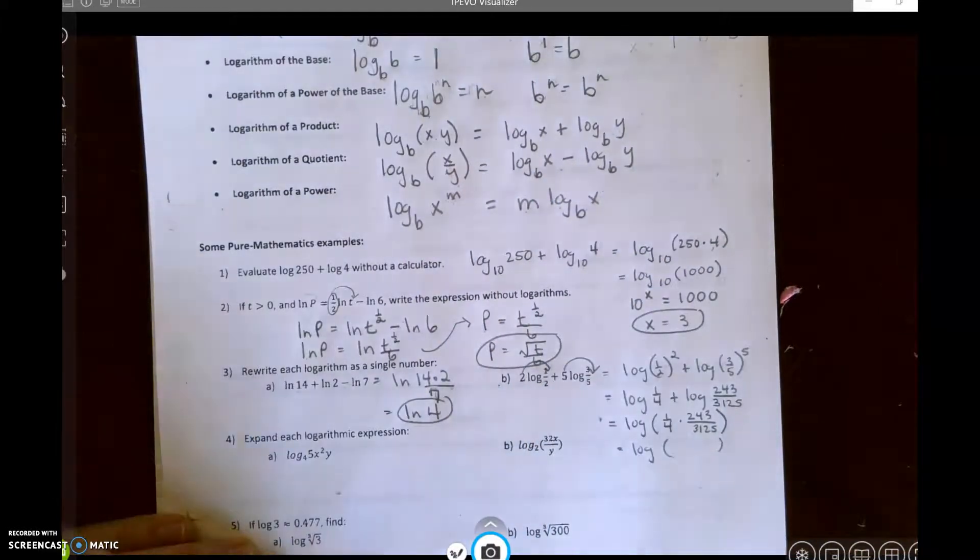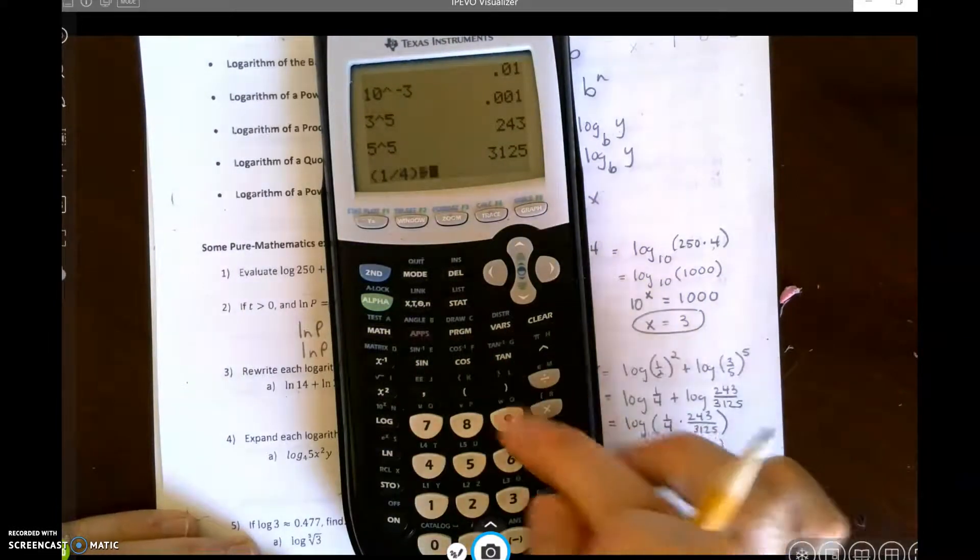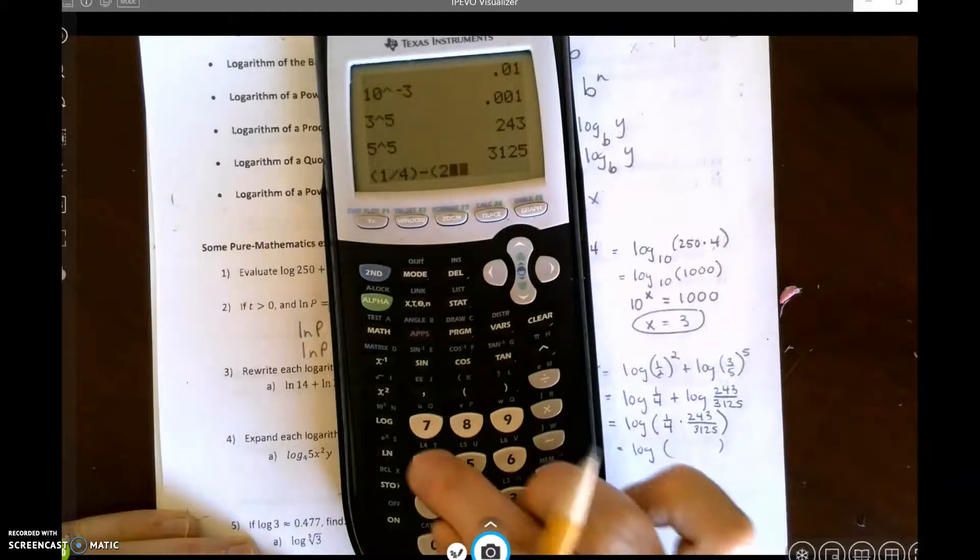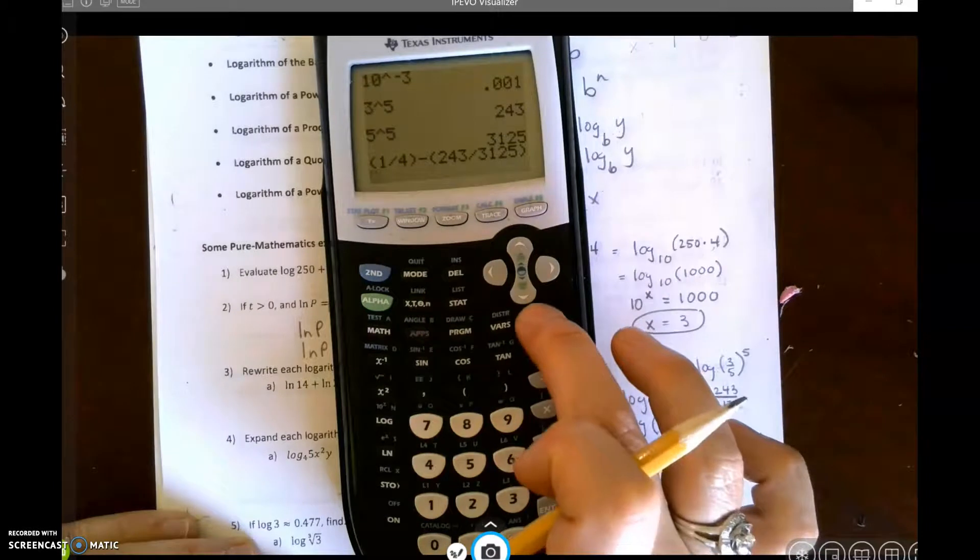One-fourth times 243 over 3,125. Oh, I didn't write times, but I hit minus. I do not need to do that.